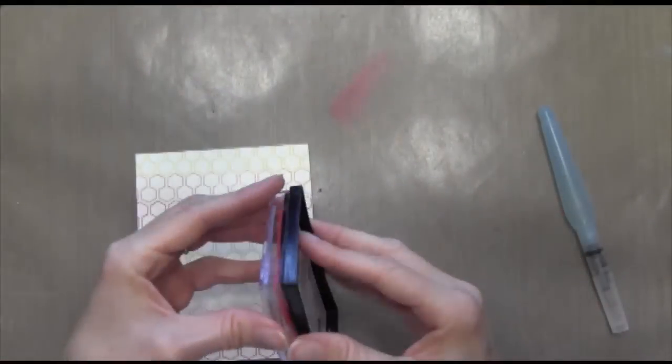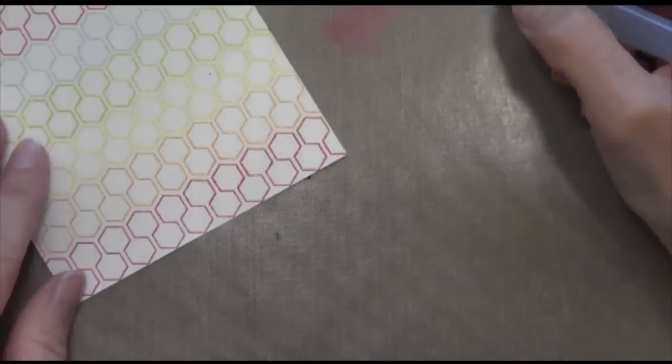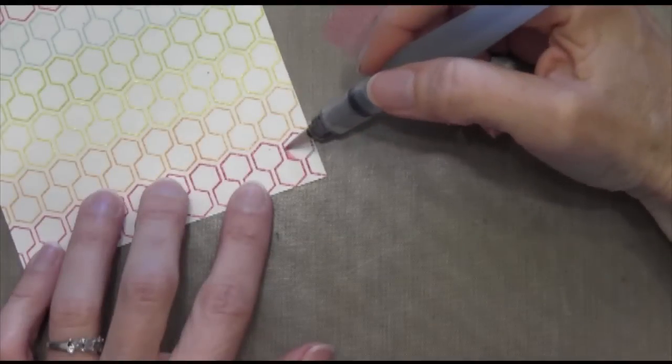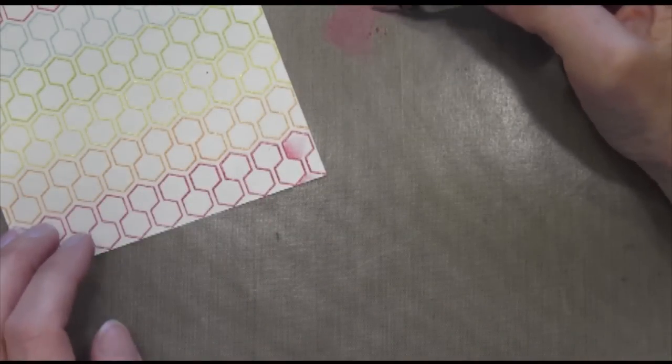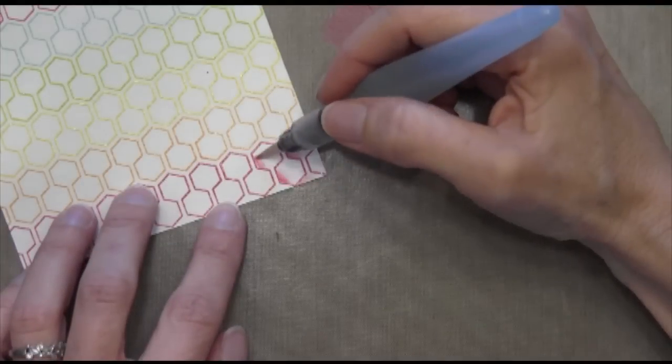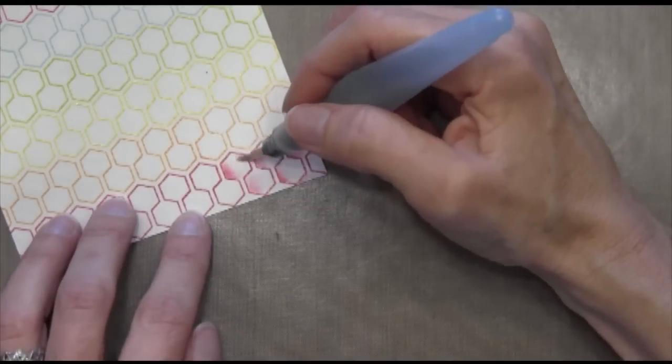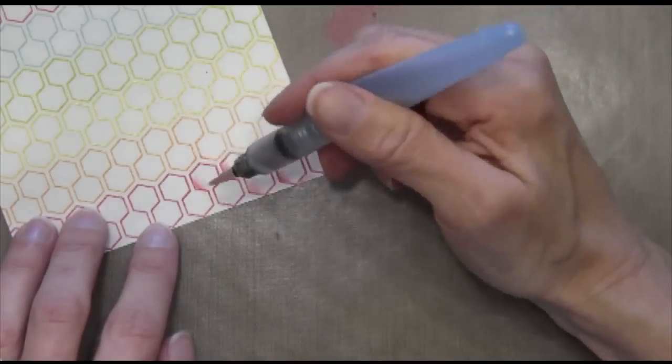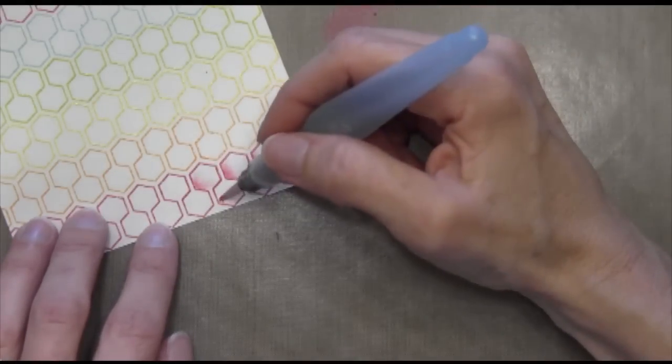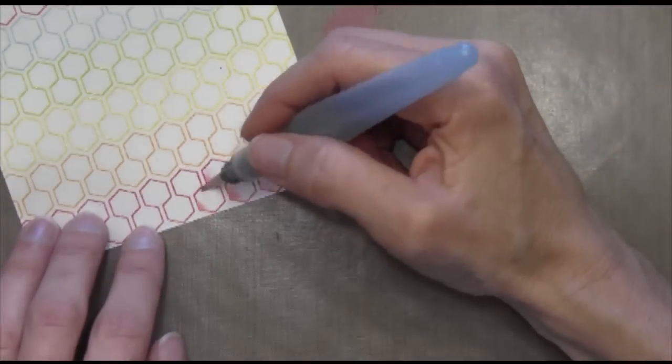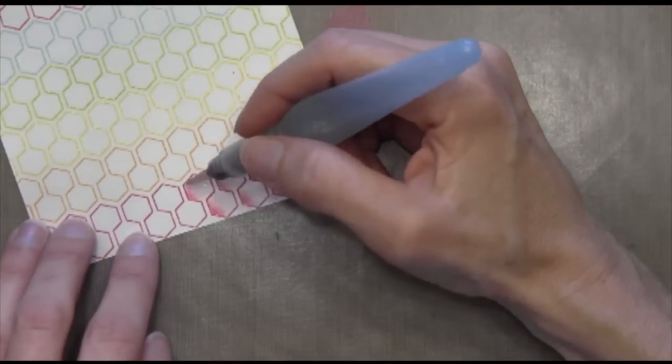Now I'm going to put some ink on my craft sheet and use an aqua painter. I'm going to grab the ink with the brush and start in the lower left-hand corner on all of these honeycombs. The ink comes out really dark at first and then lightens up as you move toward the right, which gives you some dimension.